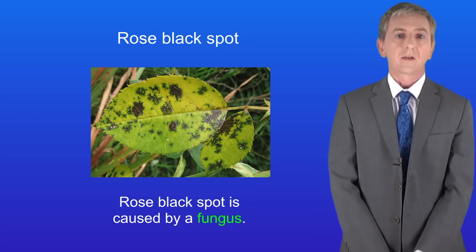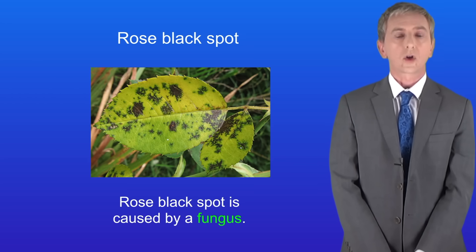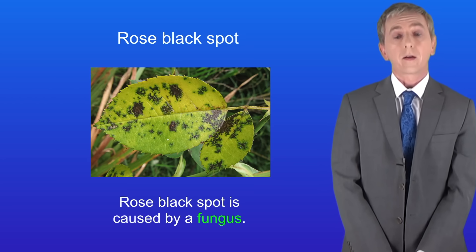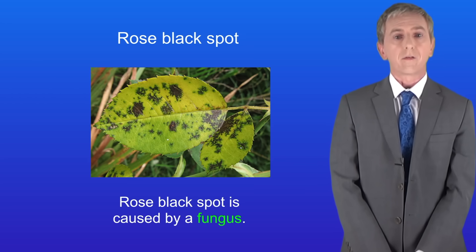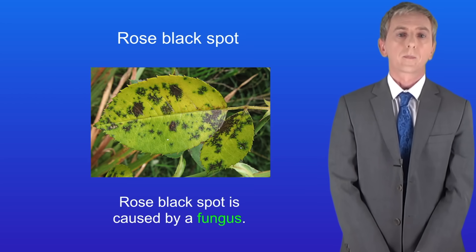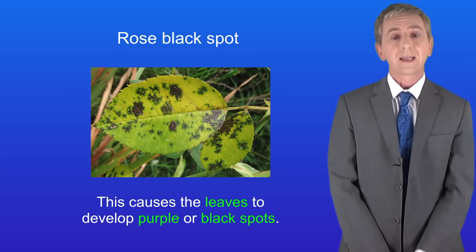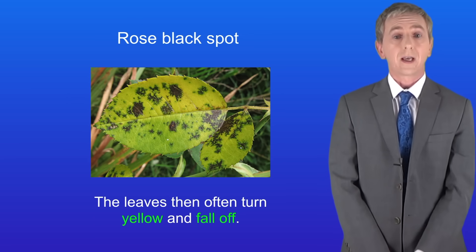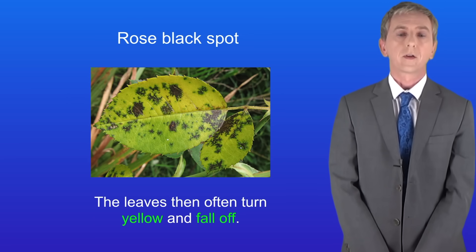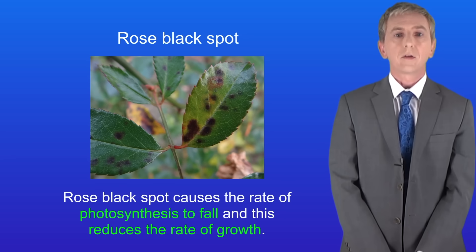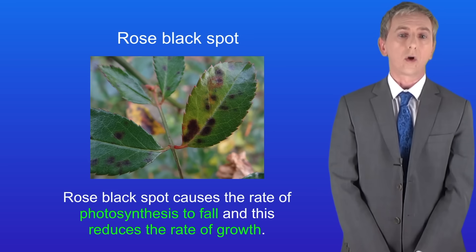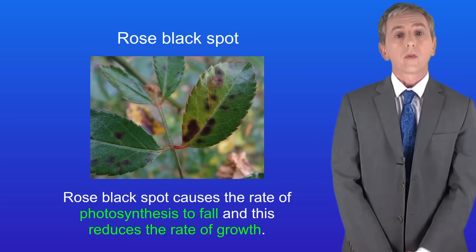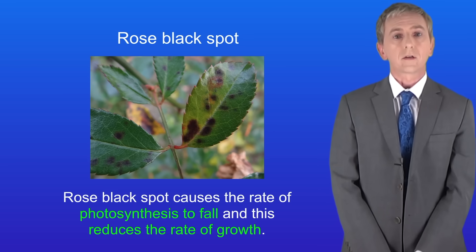The second plant disease we're going to look at is called rose black spot, and this is caused by a fungus. Rose black spot causes the leaves to develop purple or black spots. The leaves then often turn yellow and fall off. Just like TMV, rose black spot causes the rate of photosynthesis to fall and this reduces the rate of growth.